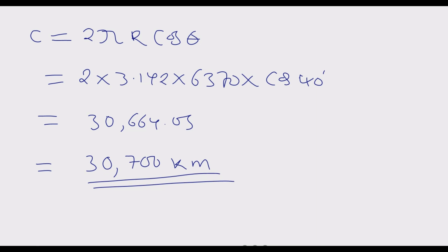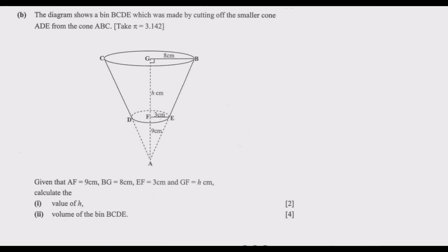That is how we answer question A. Now let us move to question B. The diagram shows a bin BCDE made by cutting off a smaller cone ADE from the larger cone ABCN. Take pi to be 3.142. Given that AF equals 9 cm, BG equals 8 cm, EF equals 3 cm, and GF equals H cm. We need to find: part 1, the value of H; part 2, the volume of the bin BCDE.